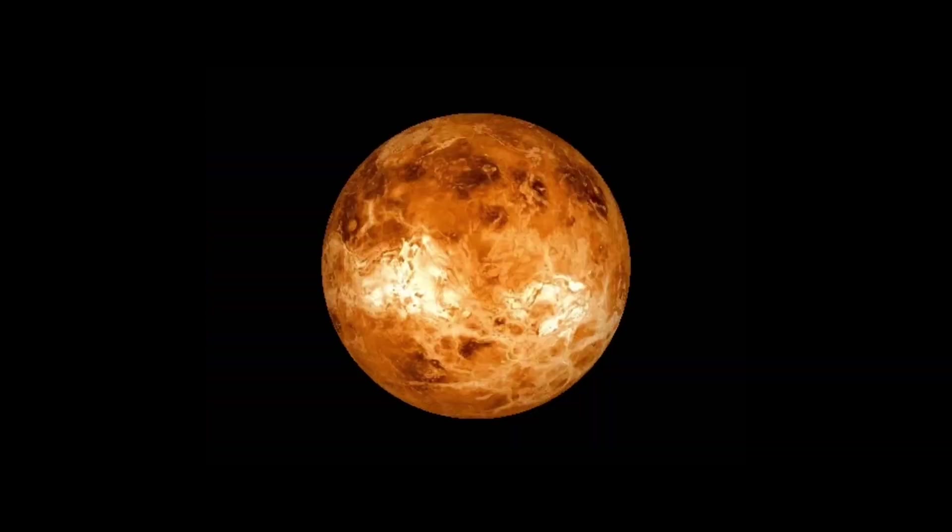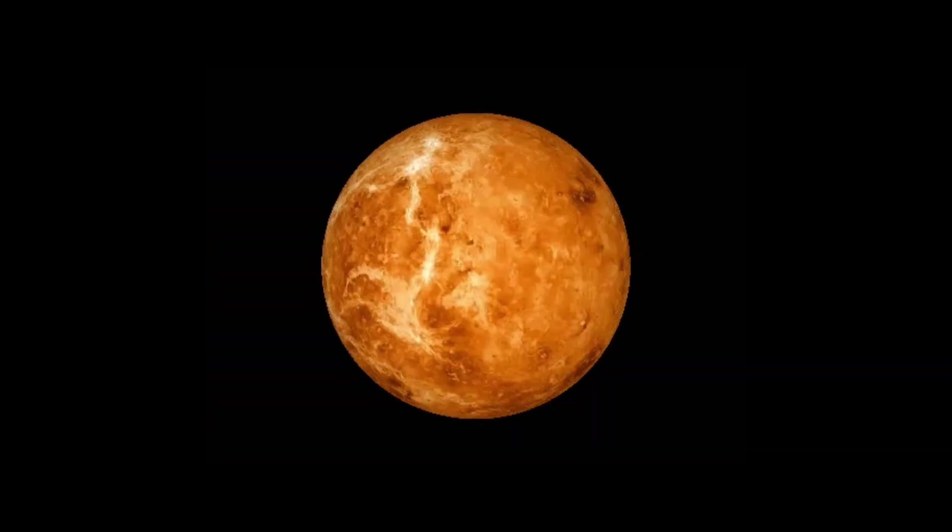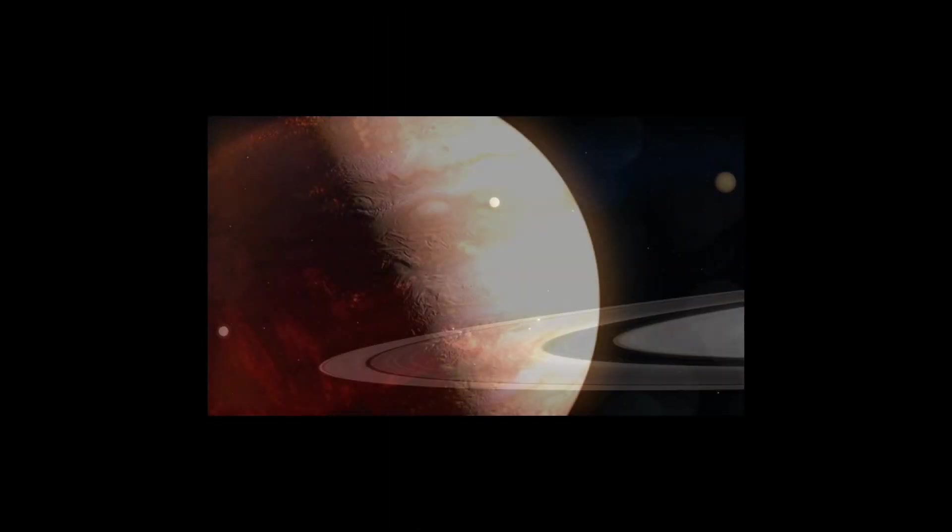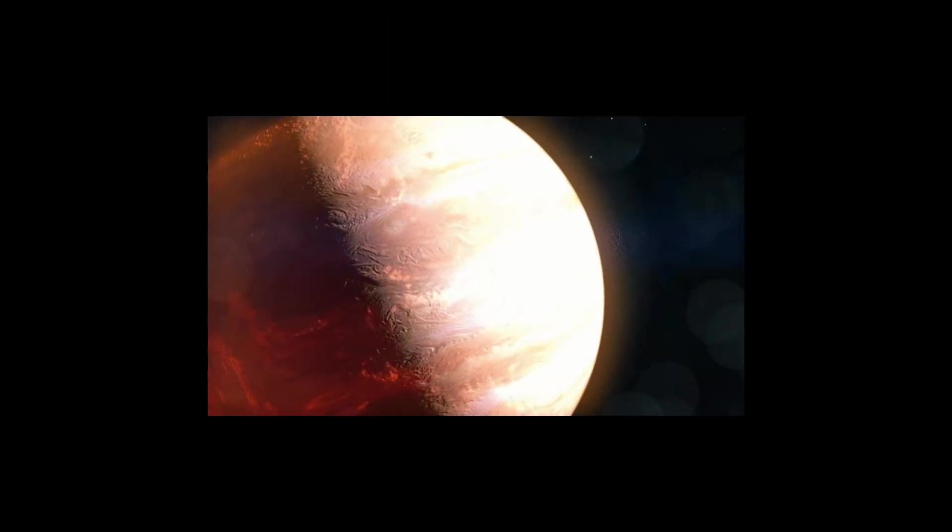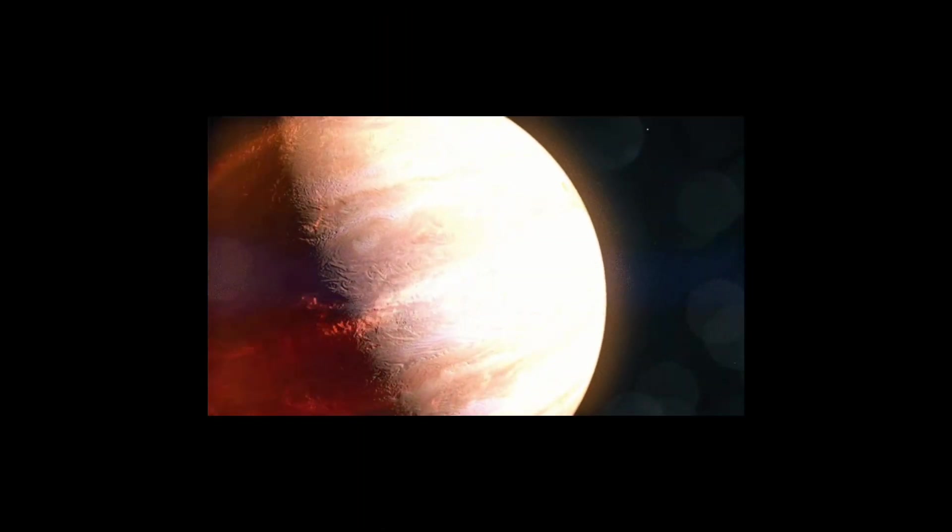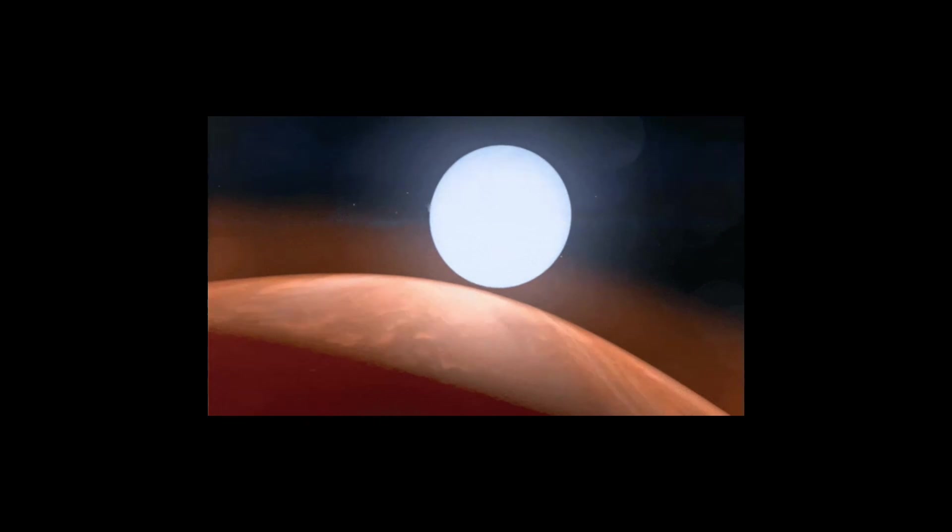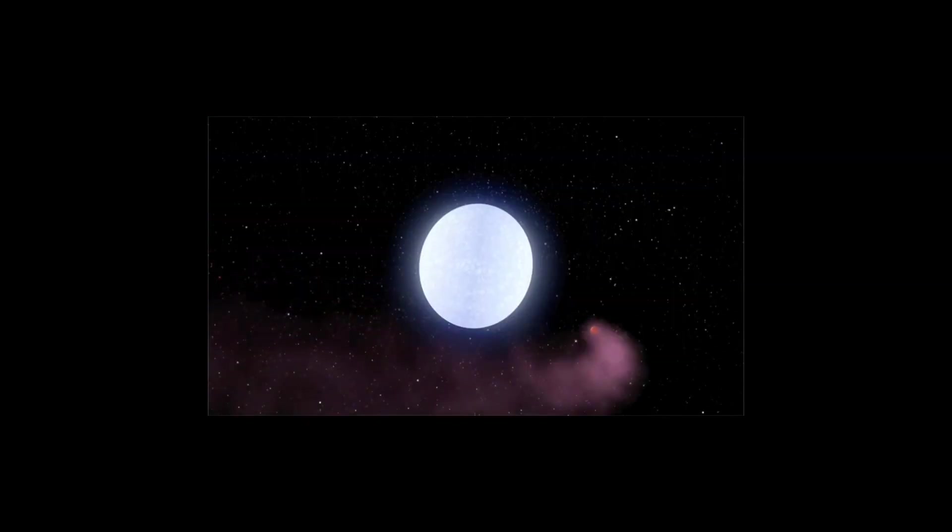Mercury and Venus are the only planets in our solar system that do not have moons. KELT-9b is one of, if not the hottest exoplanet discovered. It has a surface temperature of 7,800 degrees Fahrenheit, being hotter than some stars. It is so hot on its day side that it tears hydrogen molecules apart.